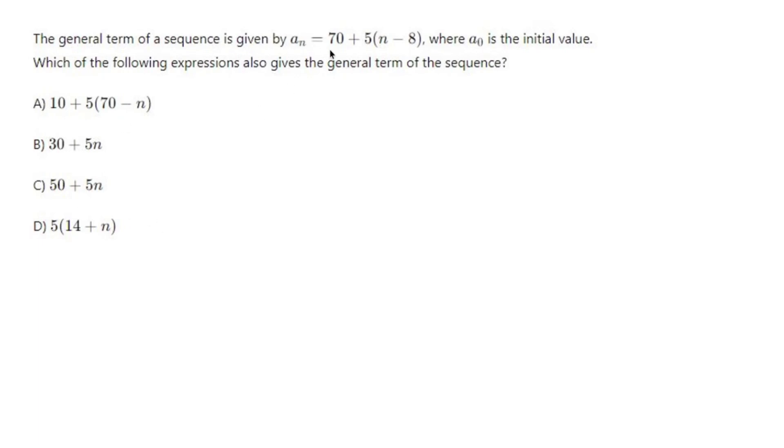So, I don't know, let's do a little bit of distributive, a little bit of combining like terms and see what happens. We get 70 plus 5 times n minus 8. All I'm doing is just rewriting the original equation without the a sub n part.